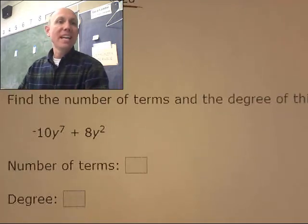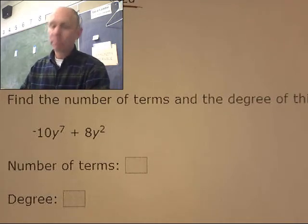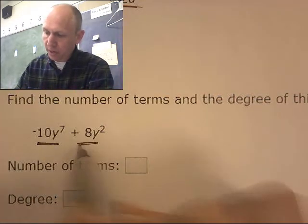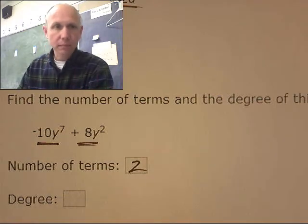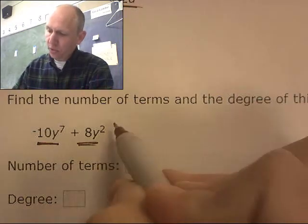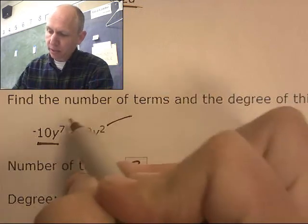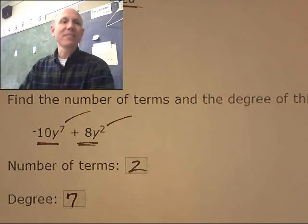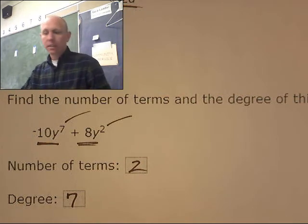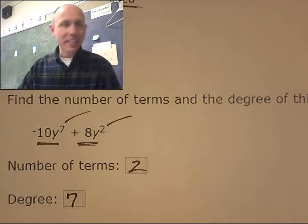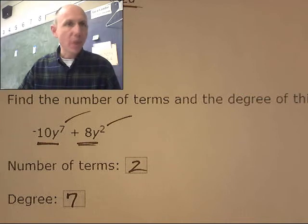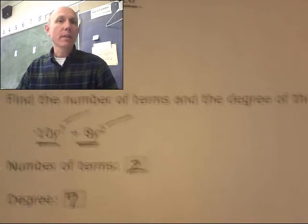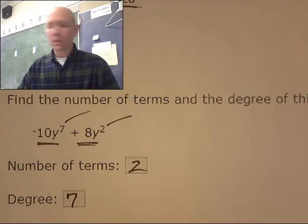Find the number of terms and the degree of this polynomial. Okay. Well, number of terms, that's easy, right? One, I have two terms. And what degree is it? Well, this is a second degree. That's a seventh degree. This is a seventh degree. It's based off of the highest term. I don't add them together. This isn't a ninth degree. No. It's based off of the highest exponent of a single monomial.